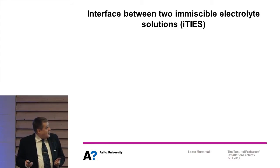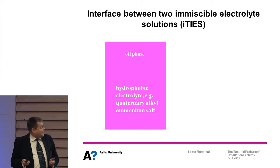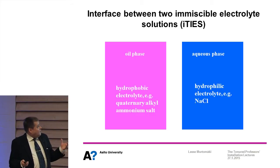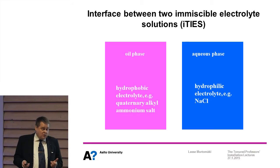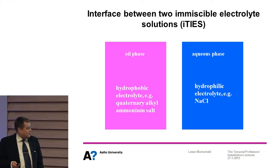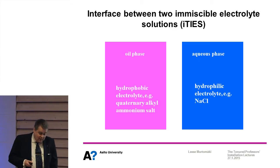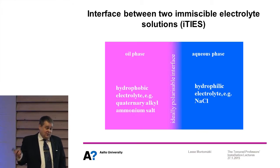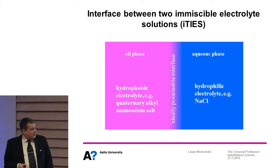My platform is called ITIES - it's not an Apple product anyway. I have an oil phase containing some hydrophobic electrolyte, typically a quaternary alkaline salt, and any normal electrolyte in the aqueous phase like sodium chloride. In between them there's an interface which we call ideally polarizable because the hydrophilic electrolytes are not capable of crossing the interface into the oil phase and the hydrophobic electrolytes are not capable of crossing the interface to the aqueous phase.